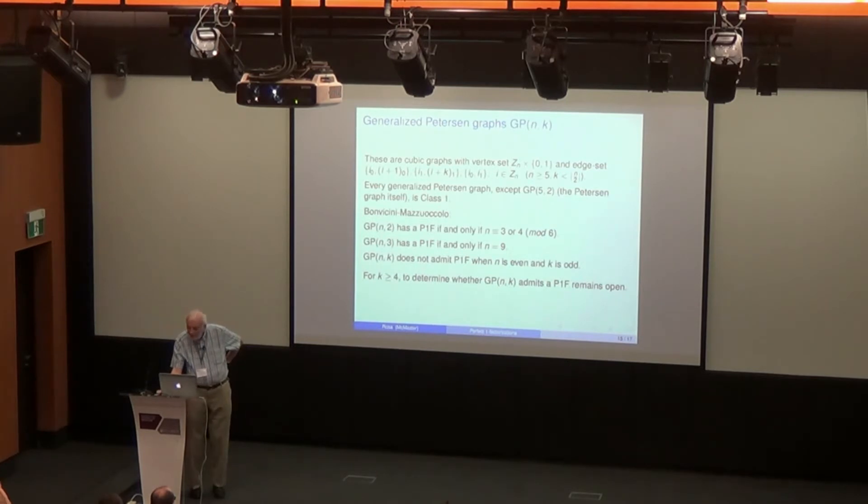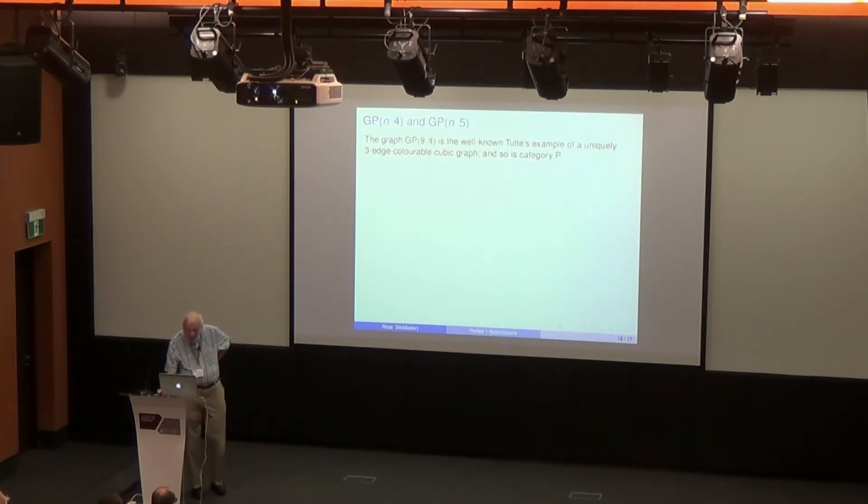When we have GP(n,3), then we have just one example possible. Then they have a necessary condition: if n is even and k is odd, we cannot have a perfect one-factorization. Okay, so that's 1, 2, 3. What about 4 and bigger? When k is greater than or equal to 4, it's an open problem. So we looked a little bit at this with Mariusz. We usually assume that k doesn't exceed, is strictly less than n over 2. So generalized Petersen graph GP(9,4), that's the smallest one with k equal 4 that we consider, and that's the well-known Tutte example of a uniquely 3-edge colorable cubic graph.